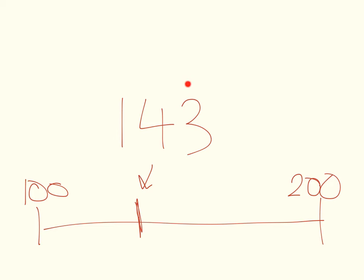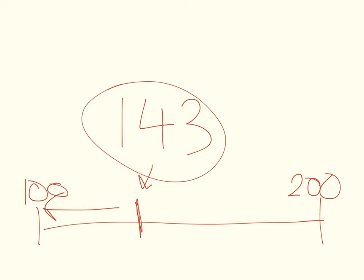Instead of looking at the units this time, I'm going to look at the tens column, which is a four. And four is our rounding number. We know from our rules that if it is four or less, we round to the previous multiple of one hundred. So one hundred and forty-three rounded to the nearest multiple of one hundred is going to be one hundred.